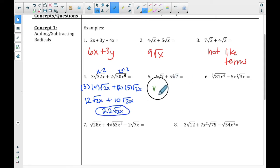Now, number 5, they are not like terms. There is no way to add those together, because third root of 7 is different from square root of 7. We can't do those. They have to be the same root.